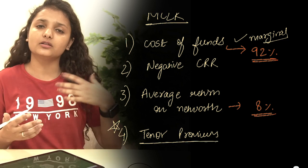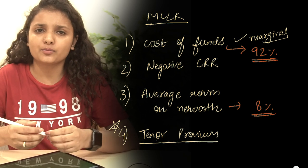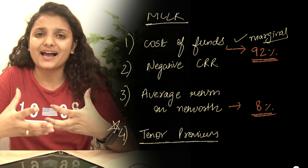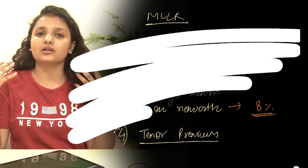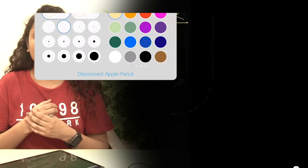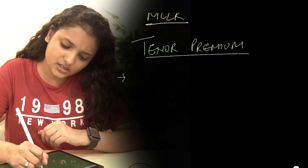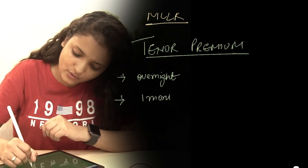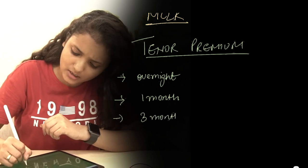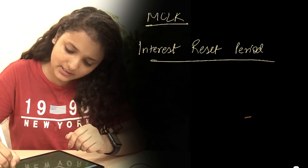The fourth and last component of MCLR is the tenor premium — a bank charges a premium based on the tenure of the loan. A longer-duration loan attracts a larger premium, and a shorter-duration loan attracts a smaller premium. According to RBI guidelines, five MCLR rates must be published by a bank on a monthly basis: overnight, one month, three months, six months, and one year. This leads to the concept of the interest reset period.